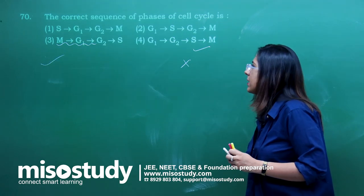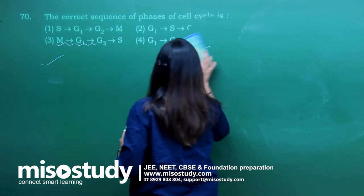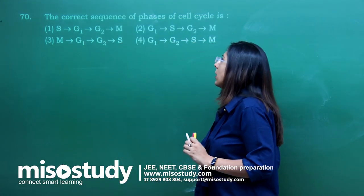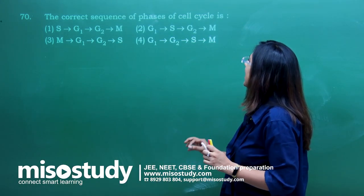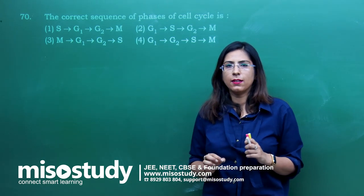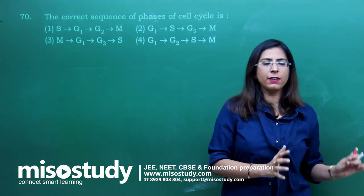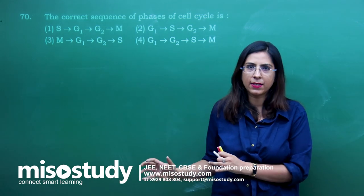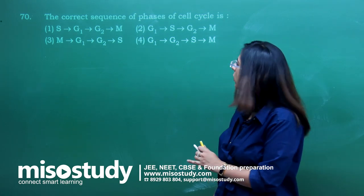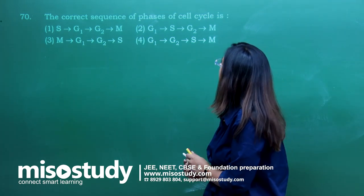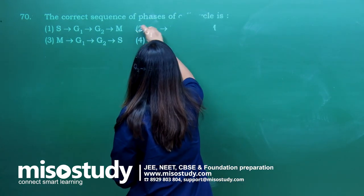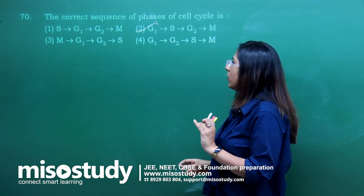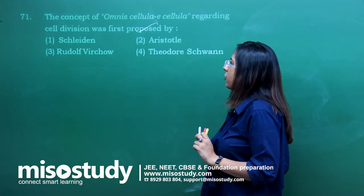Question number 70 — very easy question. The correct sequence of phases of the cell cycle is G1 phase, then S phase, then G2 phase, then M phase. The correct answer is option 2.